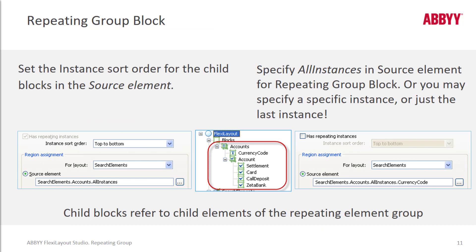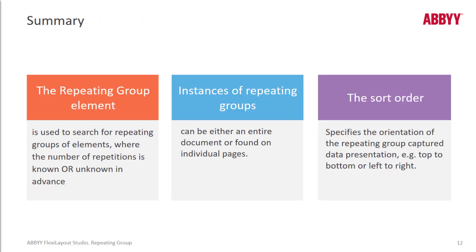The repeating group element is used to search for repeating groups of data. We may or may not know how many iterations of that data exist in advance — we really don't need to know. We can look for instances on an entire document, or limit the number of instances found on each page, such as the first three instances on each page. You can specify the sort order — for instance, top to bottom or left to right.